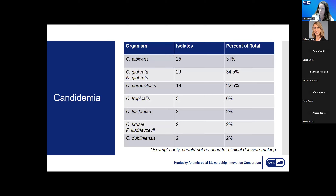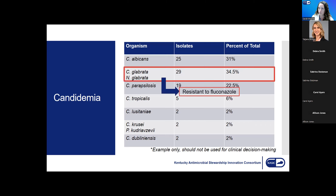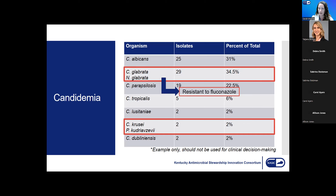As far as candidemia empiric therapy choice, this chart shows types of candidemias seen within the last year at a health system. The most frequently isolated one was what's now known as Nycoseomyces glabrata, formerly Candida glabrata — and that one is actually resistant to fluconazole. That's one of the reasons we wouldn't want to start with empiric fluconazole: our most frequently isolated Candida subtype is resistant. We can also see that what was formerly known as Candida krusei is also resistant, but it's not contributing nearly as many isolates, so it's not the primary driving force in antifungal selection.